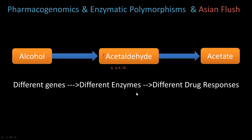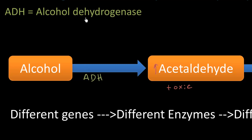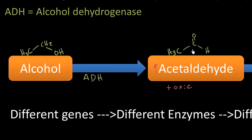Let's look at the enzymes involved in alcohol metabolism. The first enzyme is alcohol dehydrogenase, abbreviated ADH. It takes ethanol and, being a dehydrogenase, it steals a hydrogen — it oxidizes alcohol — forming acetaldehyde. In a previous video we taught you that alcohol dehydrogenase is a phase 1 metabolizing enzyme, because it's adding or unmasking a polar oxygen group, which makes things more polar.